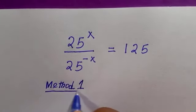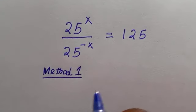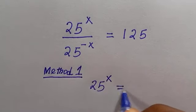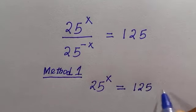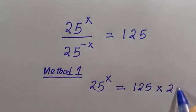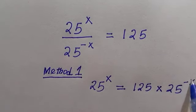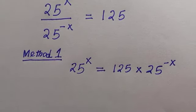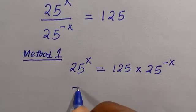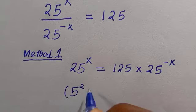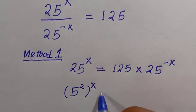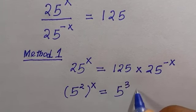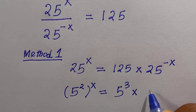For the first method, we are going to cross multiply. So we have 25 raised to power x equals 125 multiplied by 25 raised to power minus x. The next step is to convert everything to base 5. This becomes 5 raised to power 2, all raised to power x, equals 125, which is 5 raised to power 3, multiplied by 5 raised to power 2 raised to power minus x.